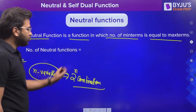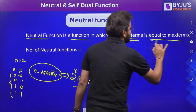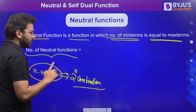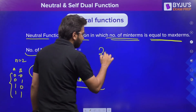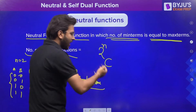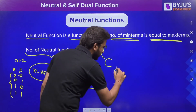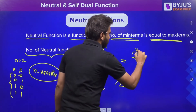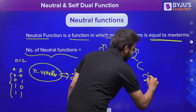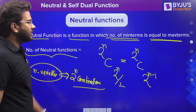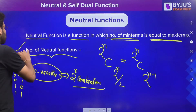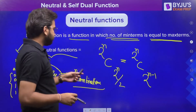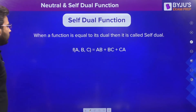Out of these 2^n combinations, we have half as the min terms and half as the max terms. So the number of neutral functions equals the number of ways to select half of the 2^n combinations, which is C(2^n, 2^(n-1)). So that is the number of neutral functions we get if we have n boolean variables.